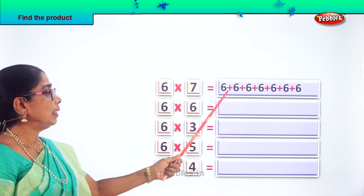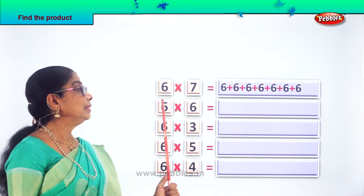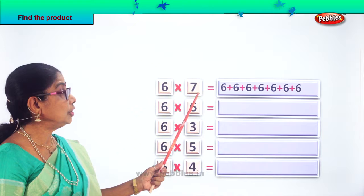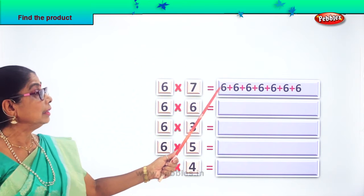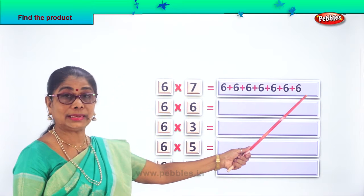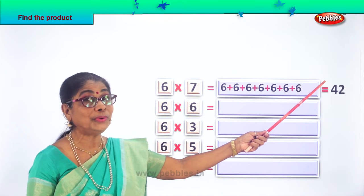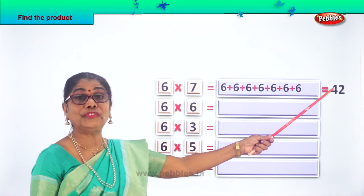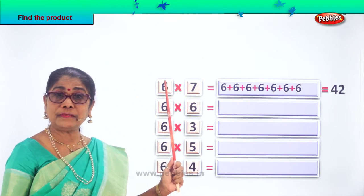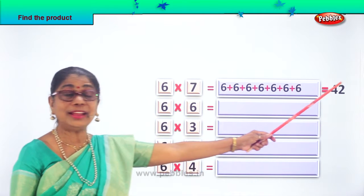We have to write 6, seven times: 1, 2, 3, 4, 5, 6, 7 times. 6 into 7. What is the product of 6 into 7? 6 plus 6 plus 6 plus 6 plus 6 plus 6 plus 6. Your answer is 6 into 7 gives you? Very good — 42. What are we doing? Finding the product of 6 into 7, 6 seven times. What is 6 into 7? 42.